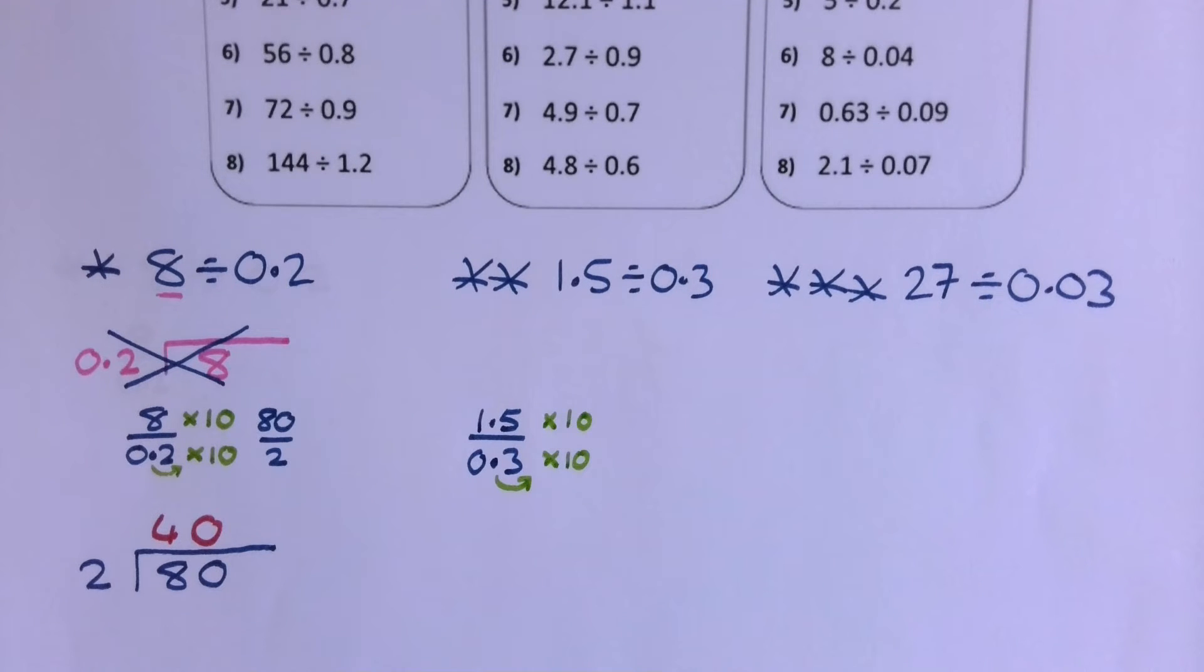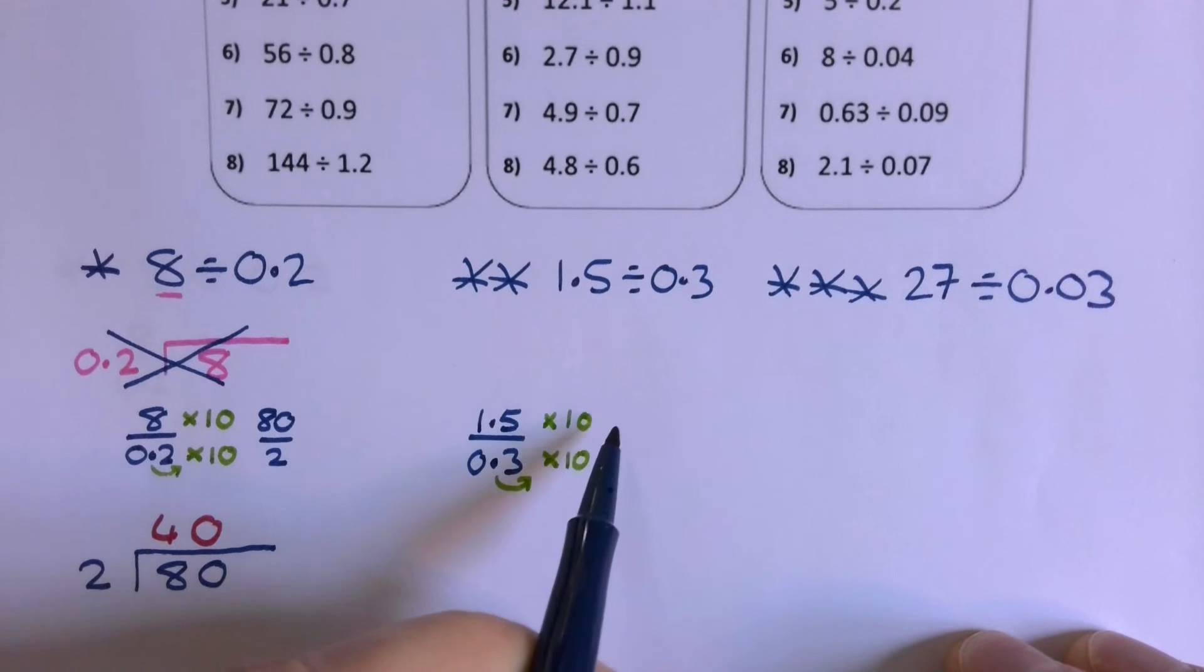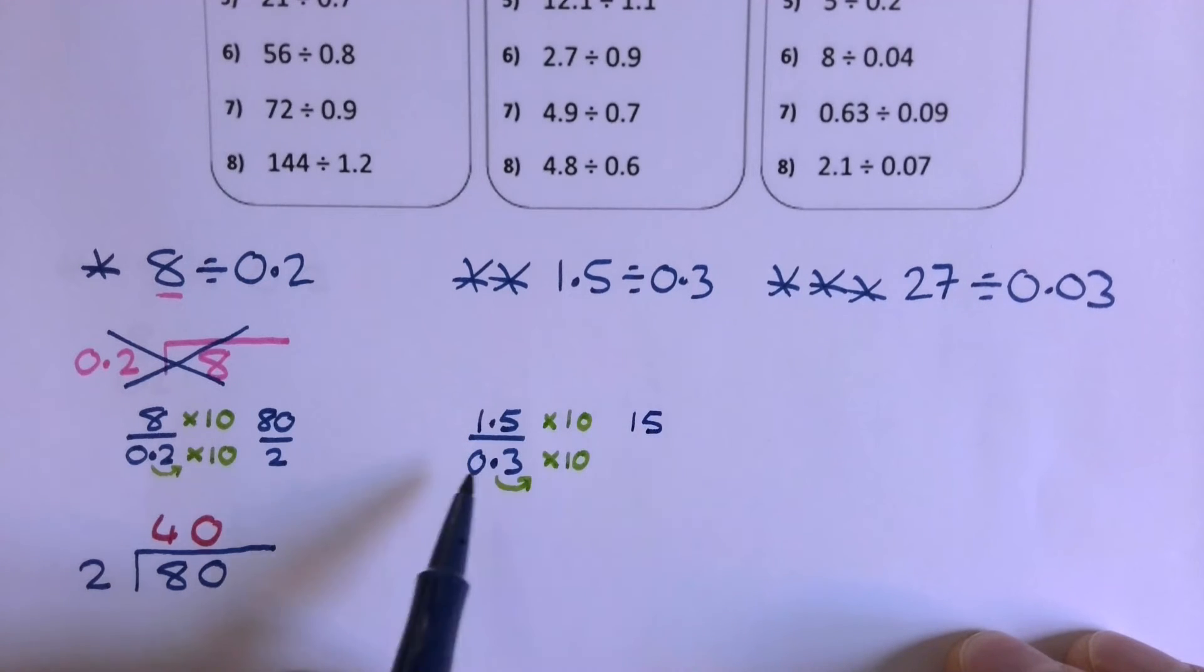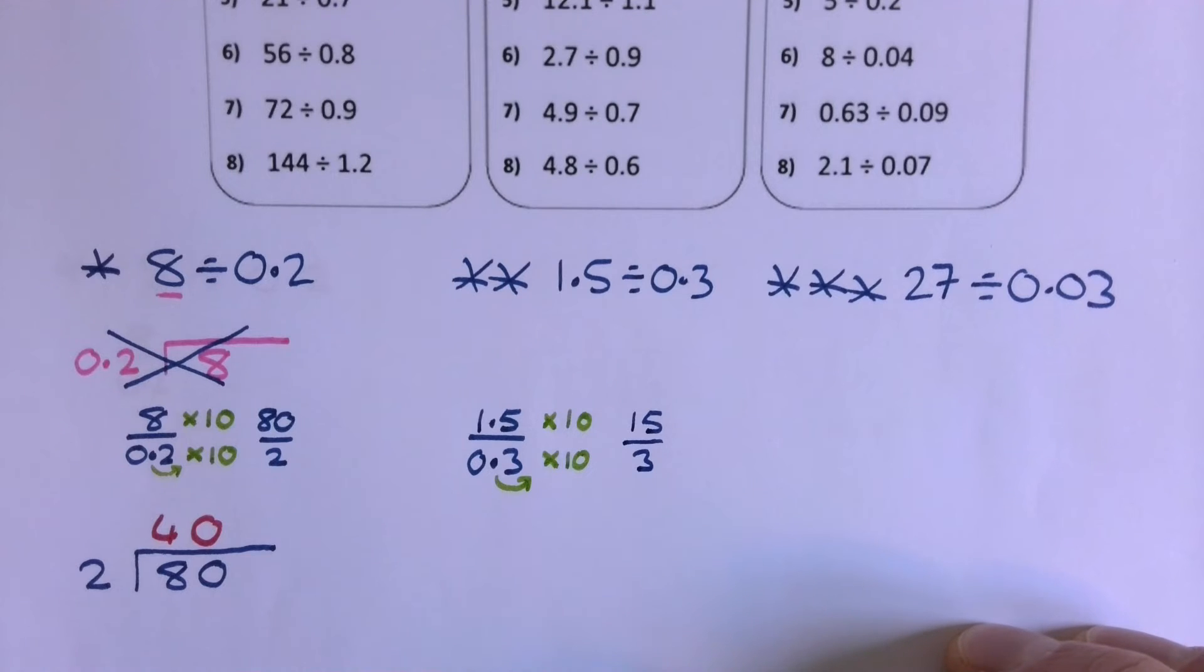So I think if I move that decimal 0.1 skip, that's going to give me times 10 again, but I've got to do that to the top as well, because I want it to be the same calculation, the same number. I don't want to be trying to fix this after I've done it. So we'll do that, and 1.5 times 10 is going to give me 15, and 0.3 times 10 is going to give me 3. And again, you could look at this as a simplifying fraction problem, what times table goes into 15 and 3 at the same time, or what is just 15 divided by 3, but let's just consider that as a bus stop again.